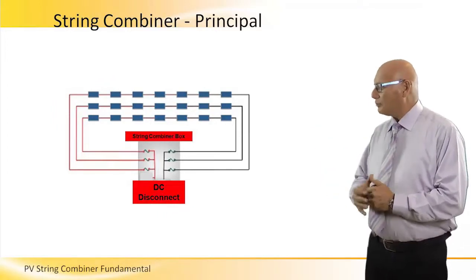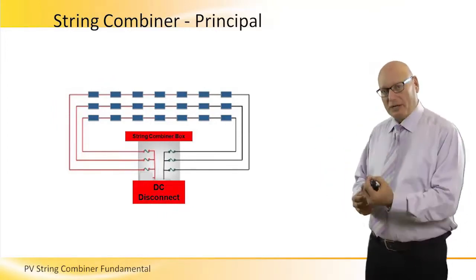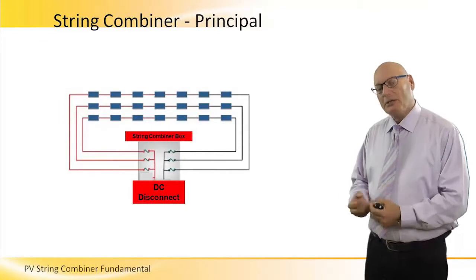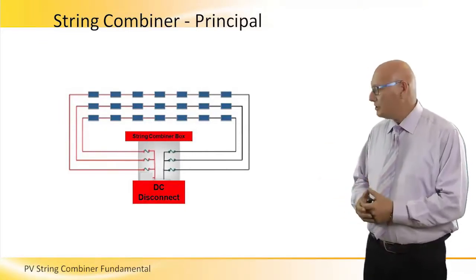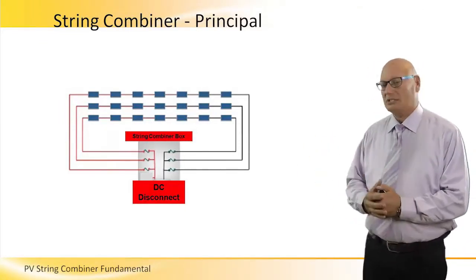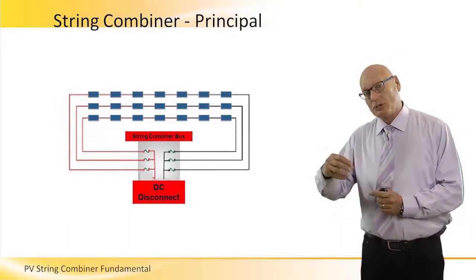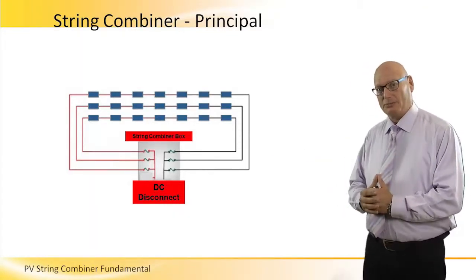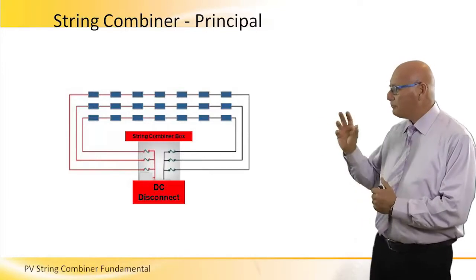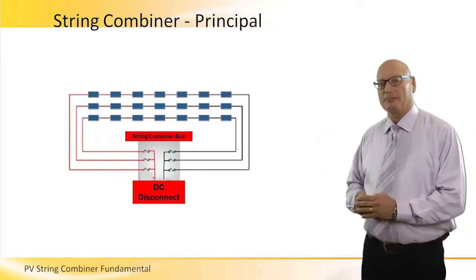What comes out of the combiner box is one common plus and one common minus DC voltage going out to a DC disconnect switch. Surge protection, we spoke about it before. So that's a principal picture of a combiner.